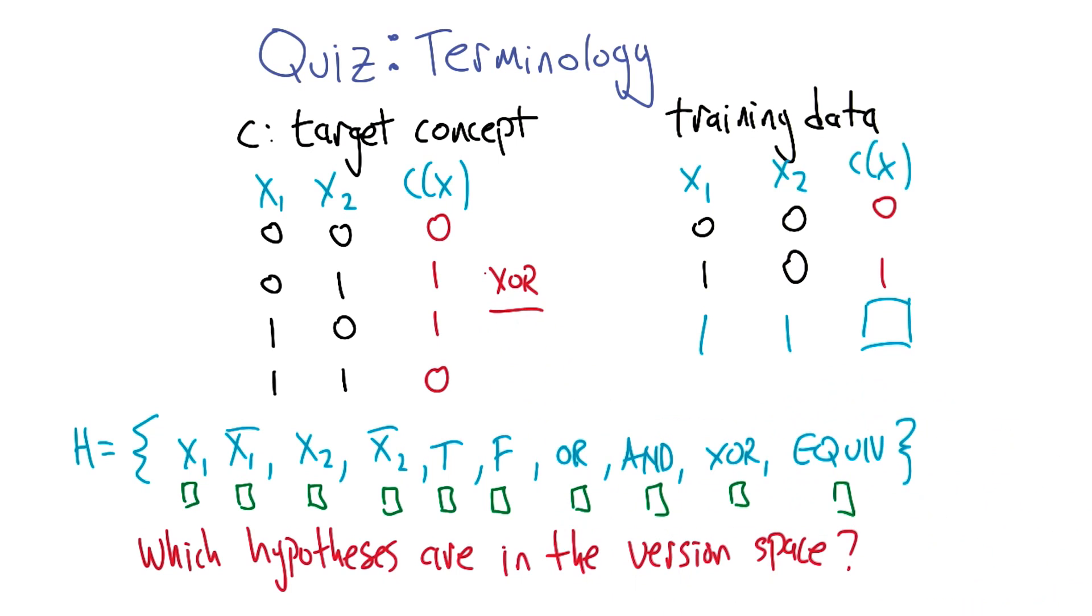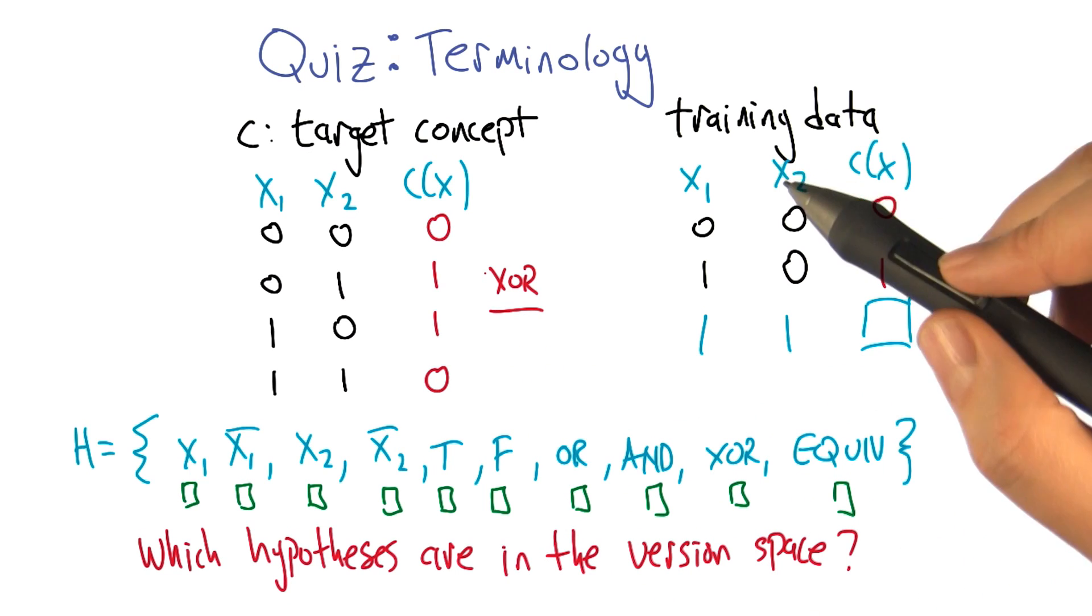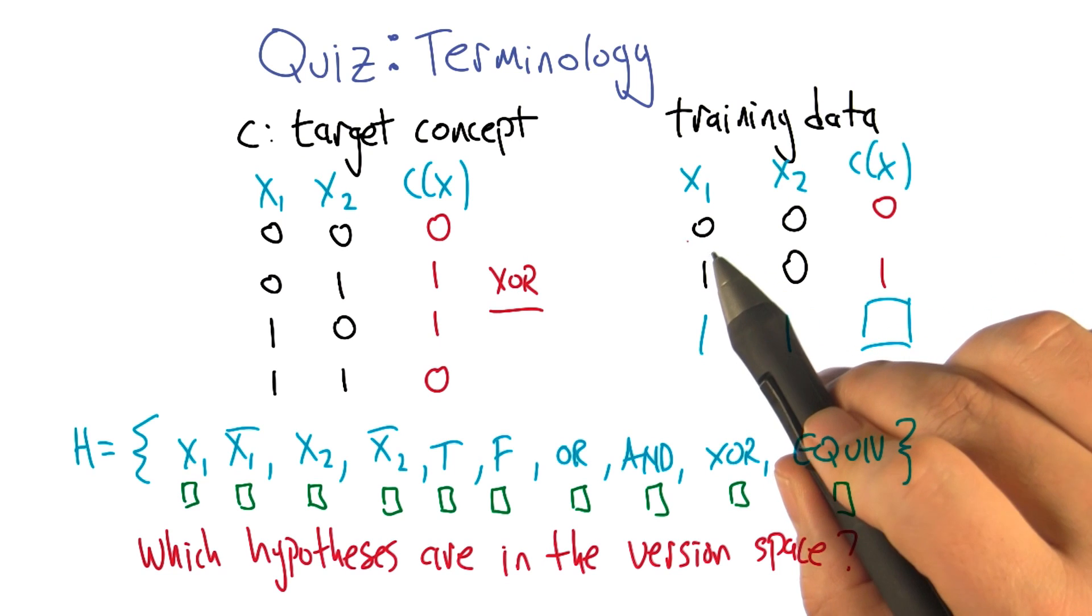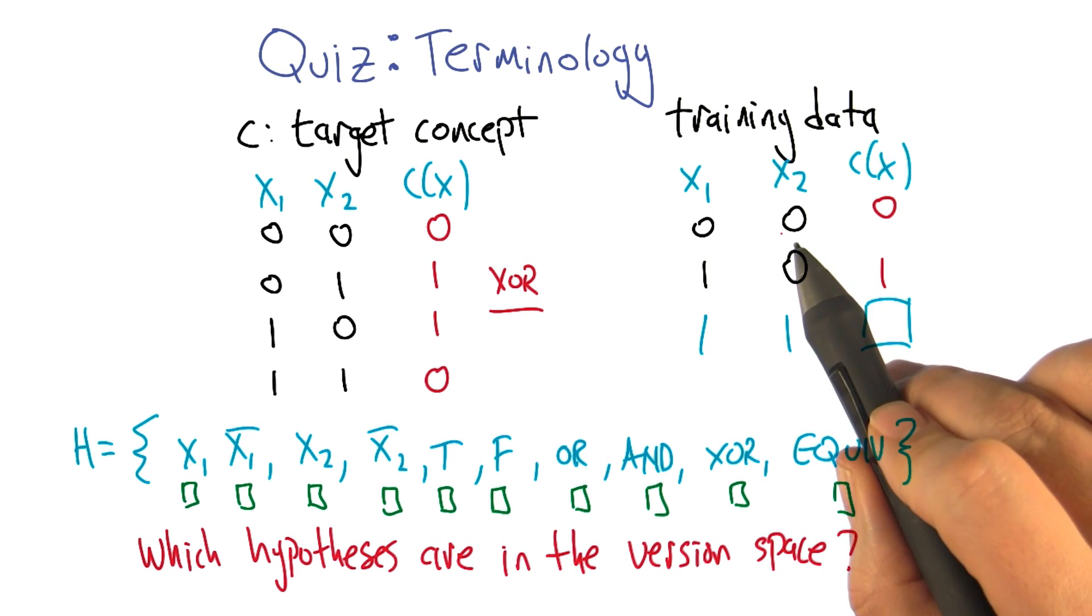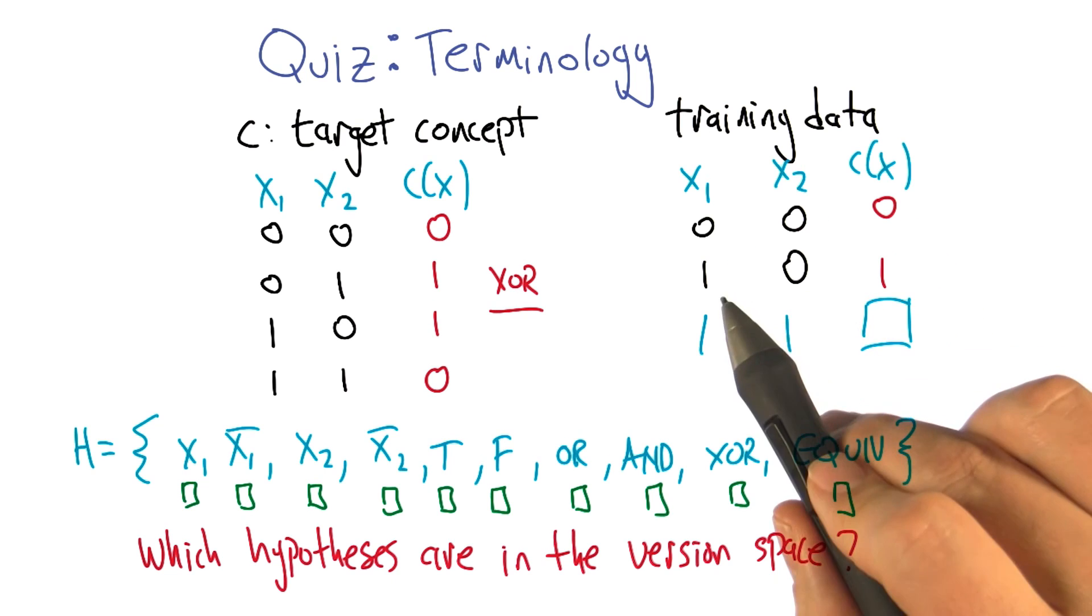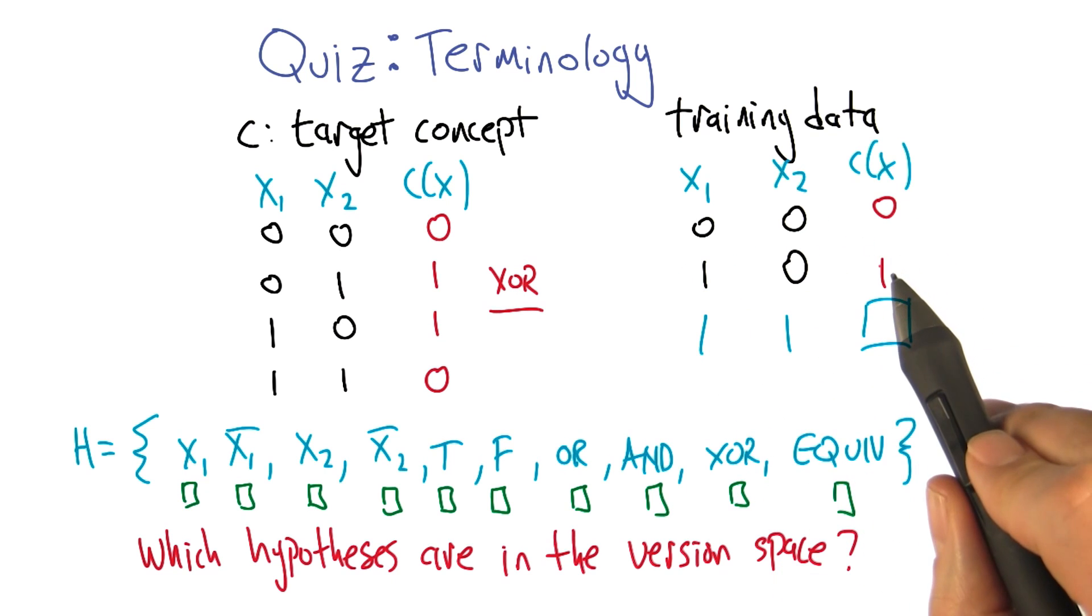Okay, so that's what we're trying to learn. But the training data that we have only has a couple examples in it. One training example says, if the inputs are 0 and 0, the output is 0. And if the inputs are 1 and 0, the output is 1.